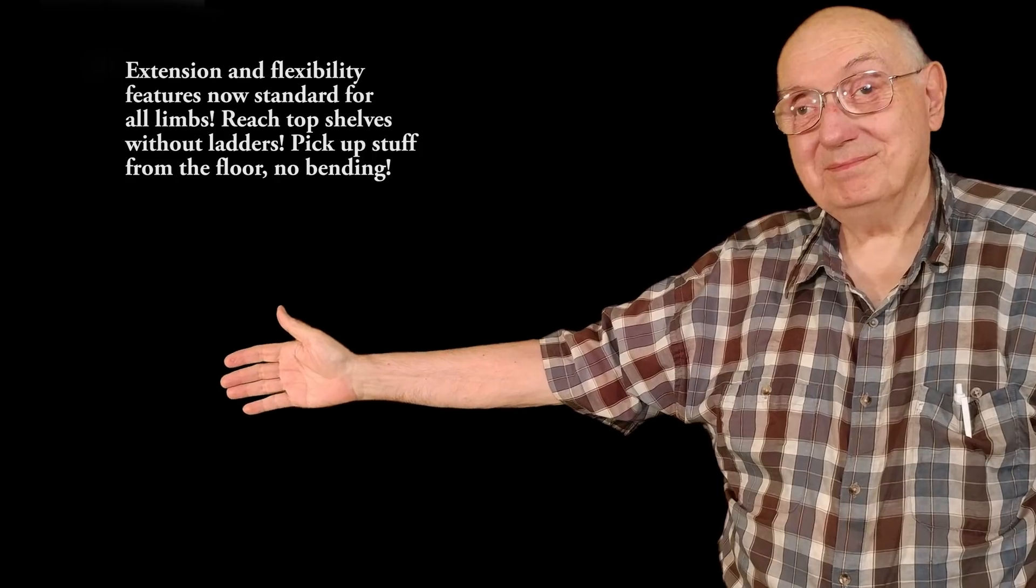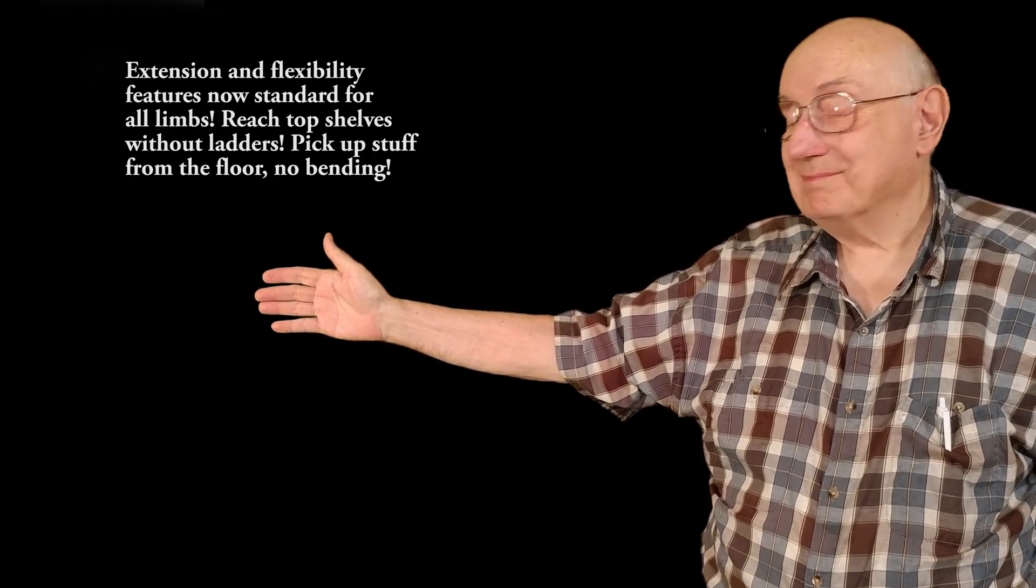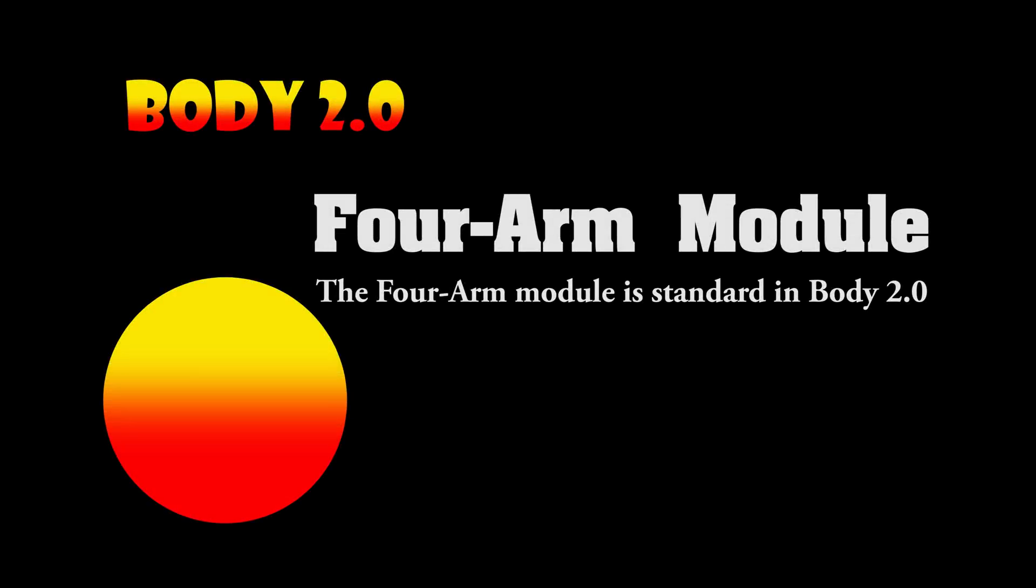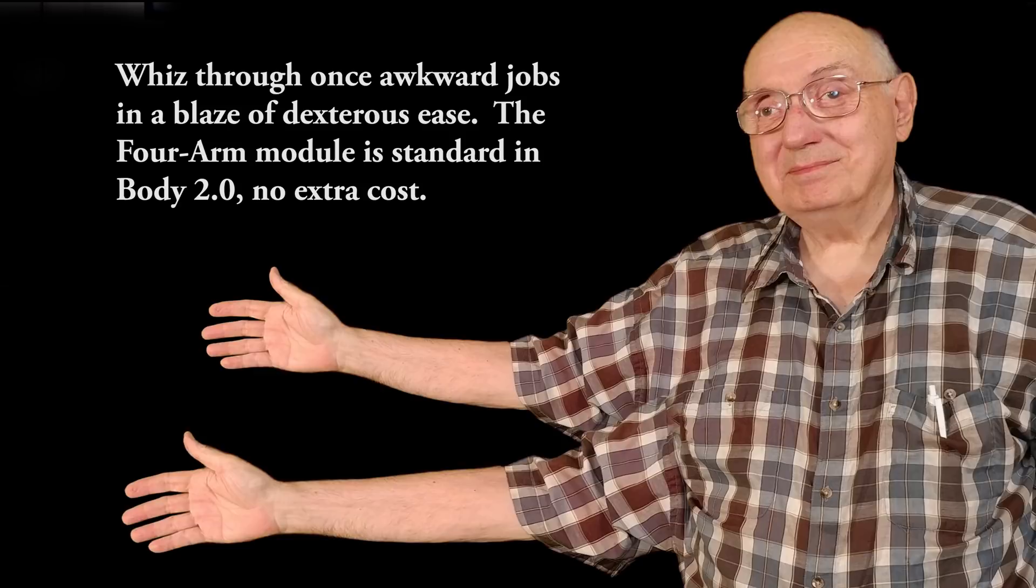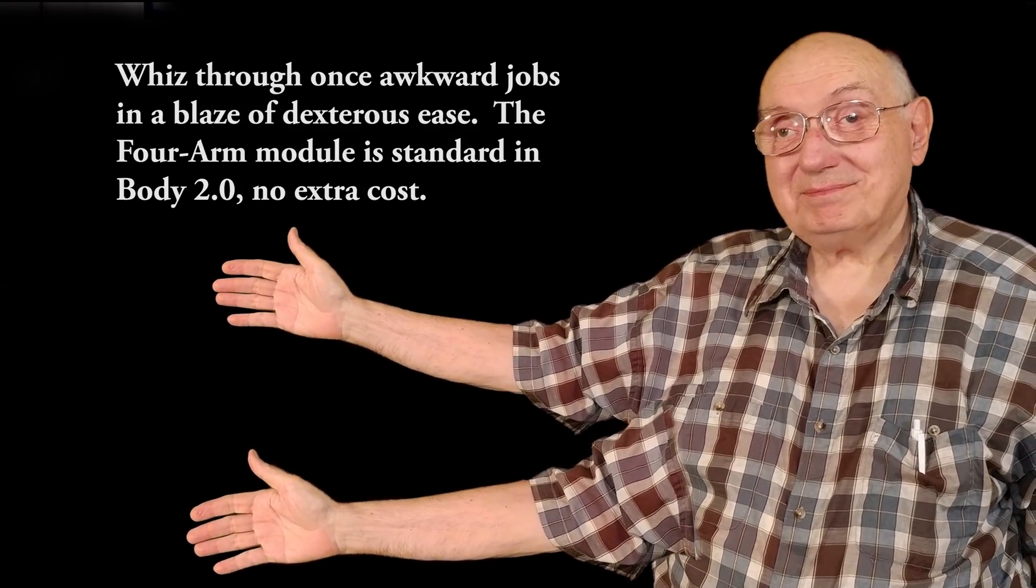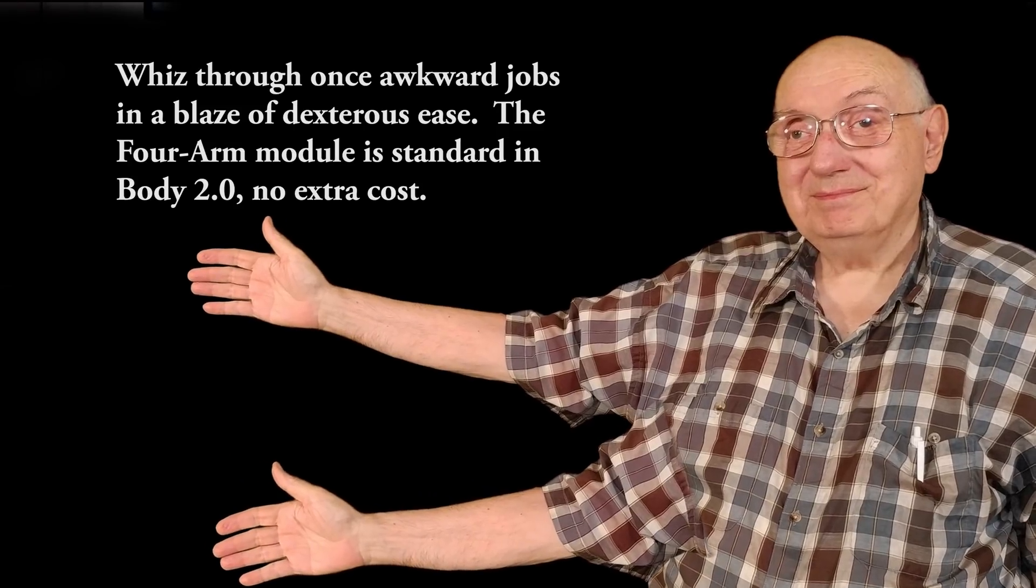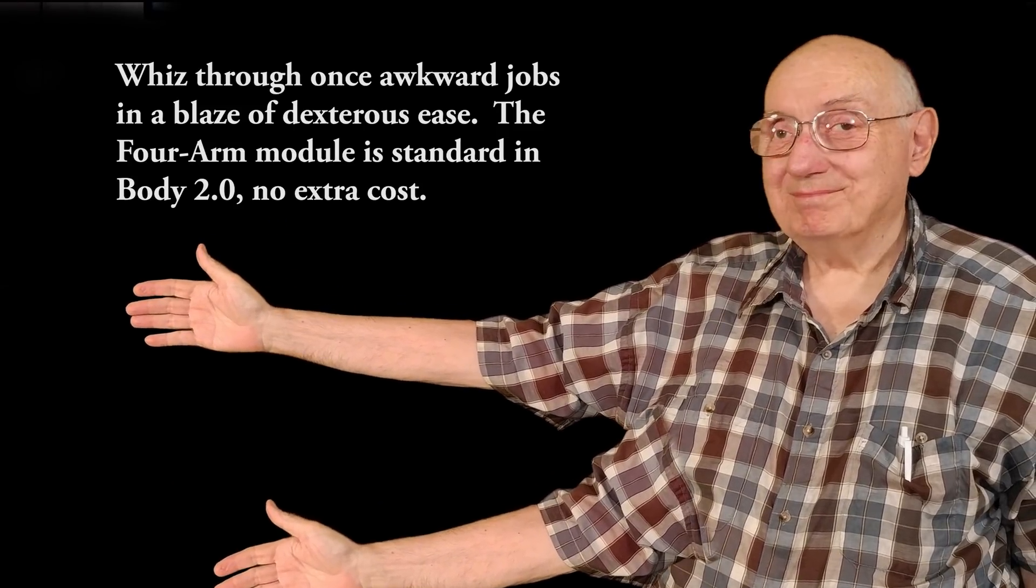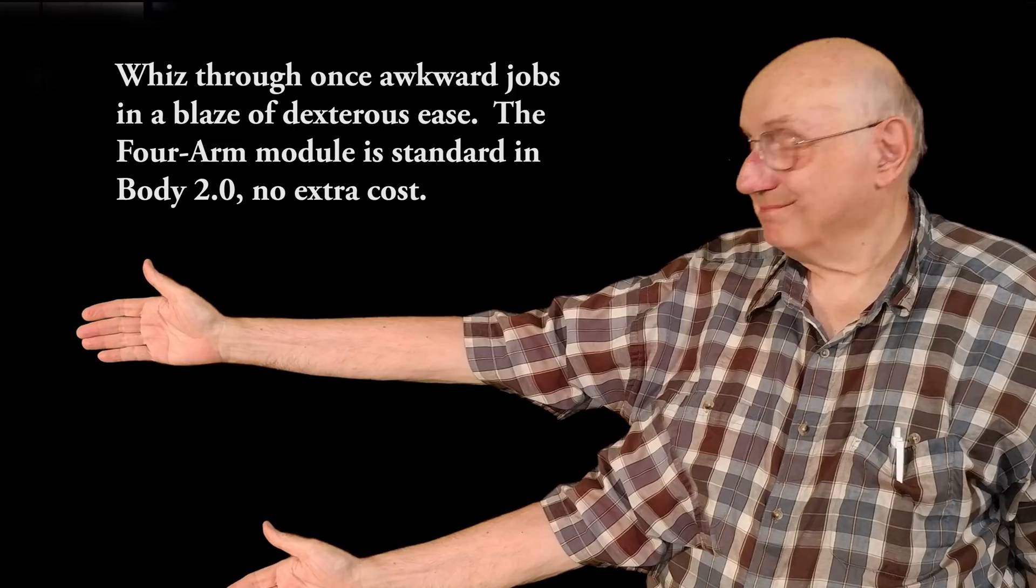But wait, there's more. Your old body has two arms. Four arms would be much better. Whiz through once awkward jobs in a blaze of dexterous ease. The four-arm module is standard in Body 2.0. No extra cost.